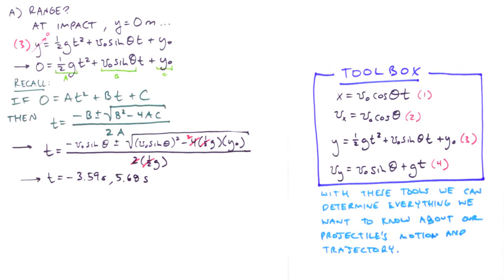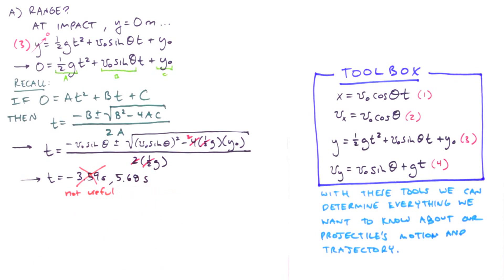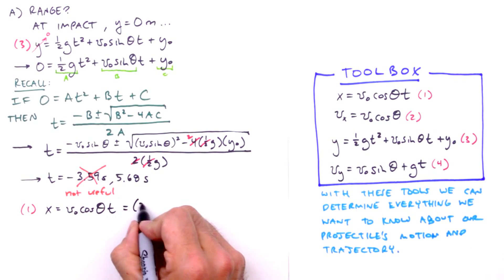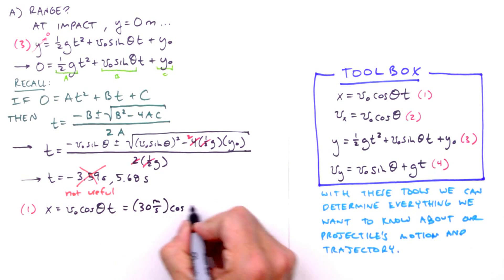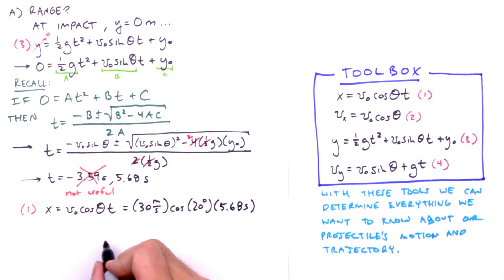The negative value is not useful for this problem. Negative time? What does it mean? So we'll lovingly discard it. Now we proceed with equation 1, write it out here, and insert the appropriate values. 30 meters per second, cosine 20 degrees, and for time we use 5.68 seconds from equation 3. And we get a horizontal displacement of 160.1 meters. All things considered, not an unreasonable range.